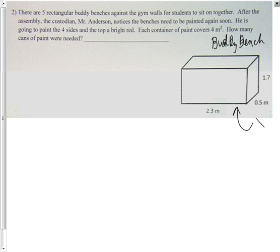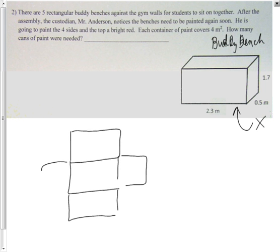I'm going to draw my net of the buddy bench. I want my five faces to be represented here. I'm going to write top, put the front, the back, and the left and right. This is not the only way, this is just my way.